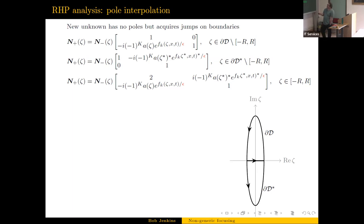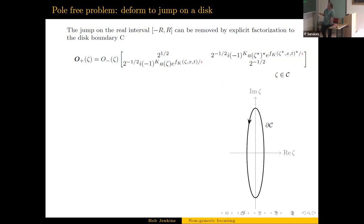And that means that we can refactor this jump on the real axis and just push it out onto a loop. You factor it and you push everything out onto a loop. So now you've got a problem on a loop, and this is when you start to think okay, maybe I've got some Painlevé-type behavior in my problem.